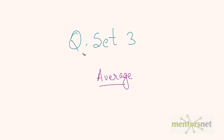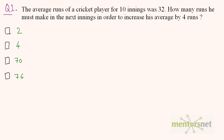This is question set number 3 on averages. The first question: the average runs of a cricket player for 10 innings was 32. How many runs must he make in the next innings in order to increase his average by 4 runs?